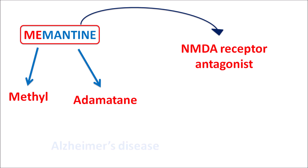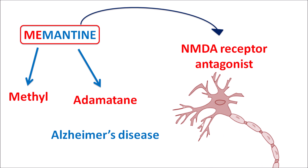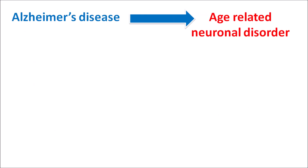This drug is indicated for the treatment of Alzheimer's disease, which is a neurodegenerative disorder caused by protein misfolding. Within the CNS we can observe neurofibrillary tangles and plaques are formed, resulting in decreased neuronal transmission. Amyloid-beta plaques are observed in patients with Alzheimer's disease, which is an age-related neuronal disorder observed in individuals greater than 55 years of age.